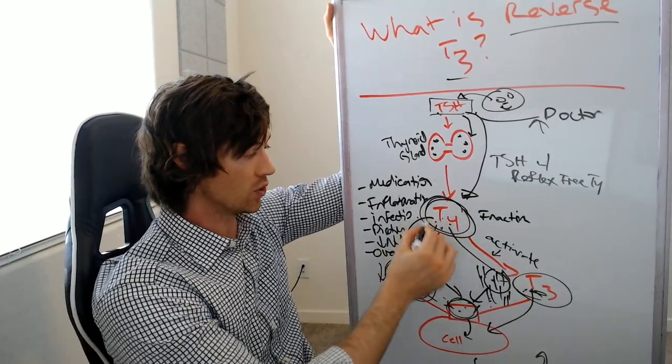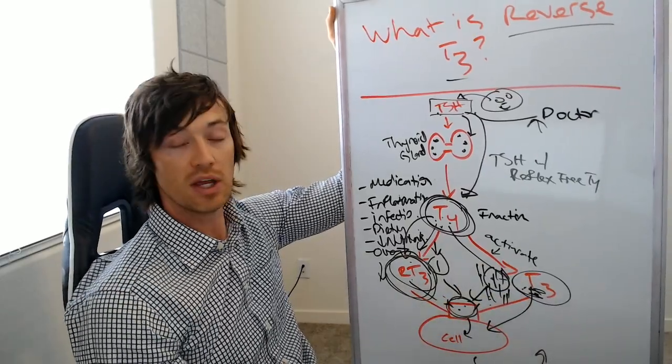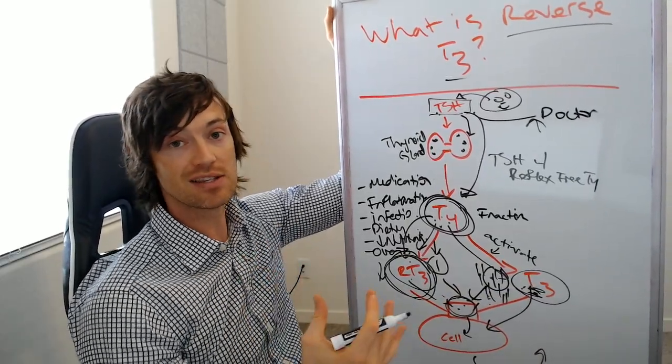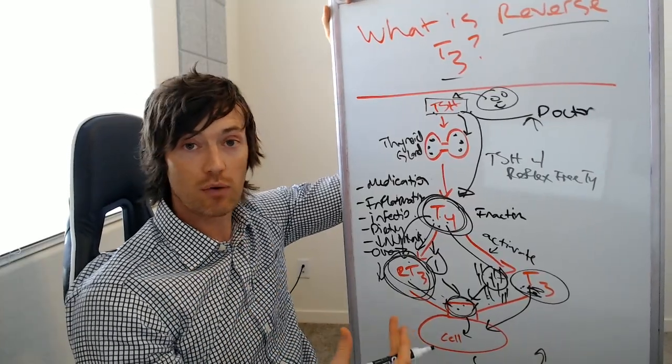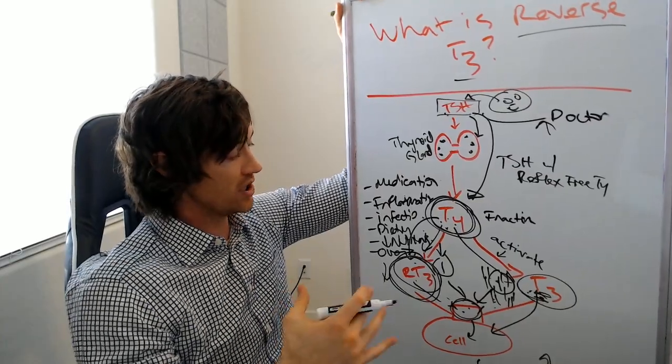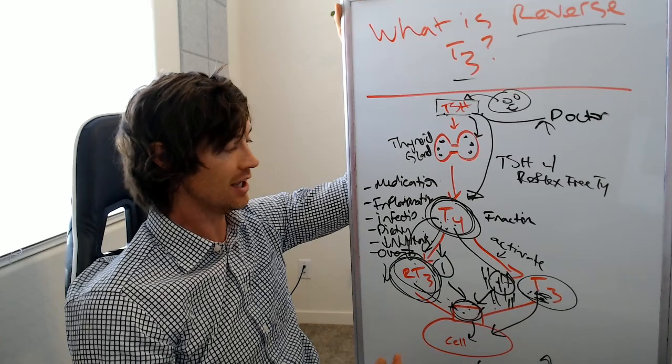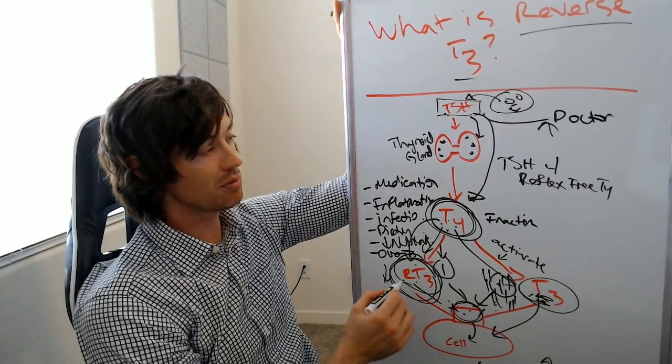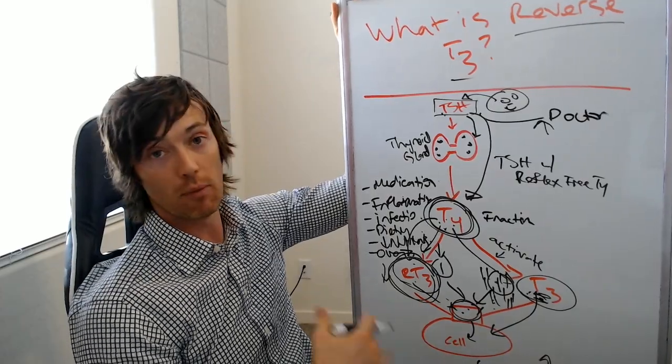Because most medications contain only T4, but you can actually take T3 and then bypass this whole thing altogether. So it gives you a lot of information and insight in terms of what you should be doing, how you should be treating your thyroid, what sort of things that you should be doing to help naturally treat your thyroid, what types of thyroid medication you should be taking, and so on. So reverse T3 is incredibly important in helping you understand how you should proceed with your thyroid hormone management.